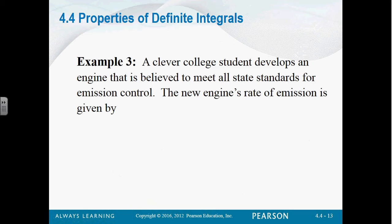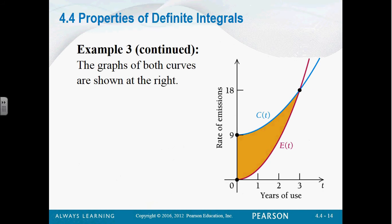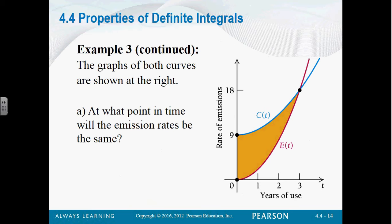Suppose we have a clever college student who develops an engine that's believed to meet all state standards for emission control. The new engine's rate of emission is given by e of t equals 2t squared — emissions in billions of pollution particles per year at time t in years. The emission rate of a conventional engine is given by 9 plus t squared. The question is: at what point in time will the emission rates be the same? We just set e equal to c, and we're looking at 2t squared equals 9 plus t squared.